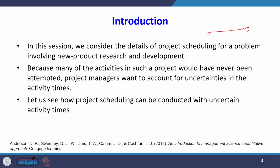There will be an activity with a three time estimate given: optimistic time, most likely time, and pessimistic time. Because many activities in such a project would have never been attempted, the project manager wants to account for uncertainties in the activity times.